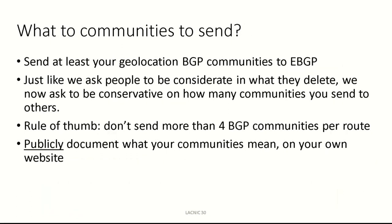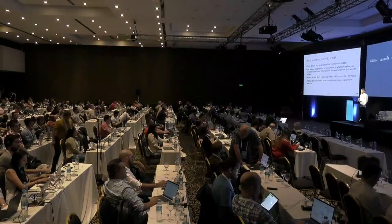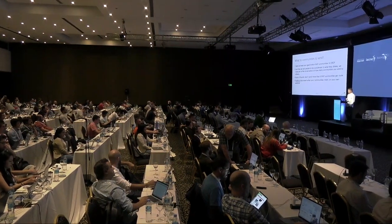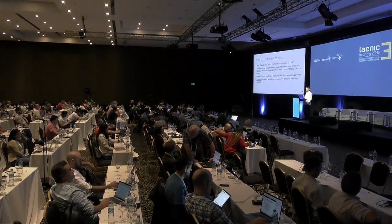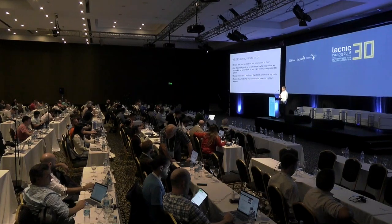What communities should you send to your neighbors — customers, peering partners, upstreams? I would ask you to send at least geolocation BGP information: where did you learn the route — was it in this country, that city, or that continent? Geolocation information is usually what is used for traffic engineering. As a rule of thumb, do not send more than four BGP communities that you set yourself. When sending through eBGP out, delete communities not interesting to others and just leave the geolocation communities. And finally, publicly document what the communities mean so that partners or customers can make informed decisions when doing traffic engineering.